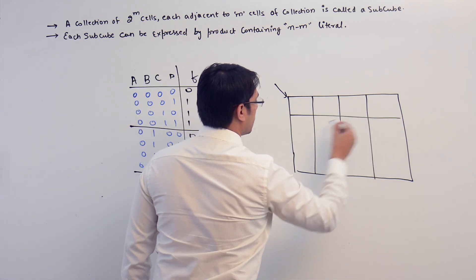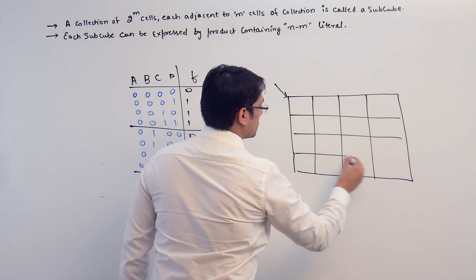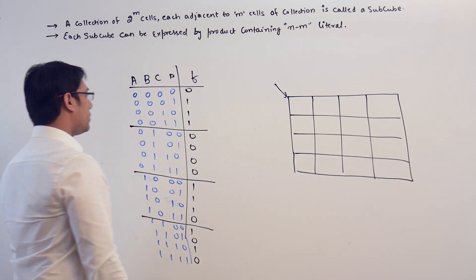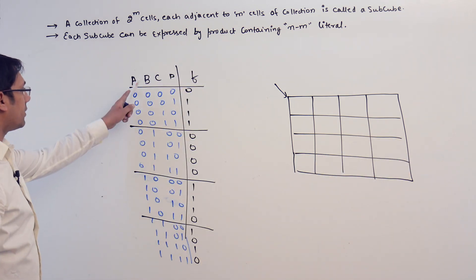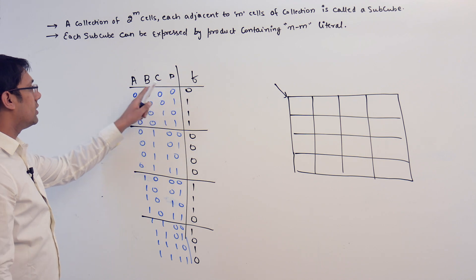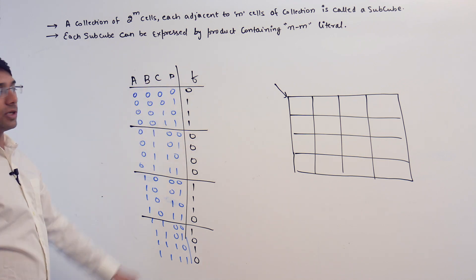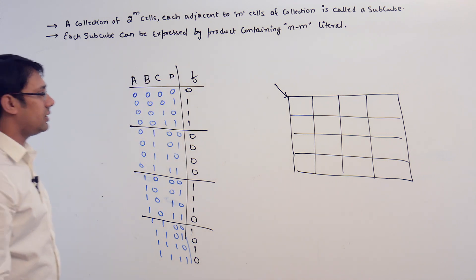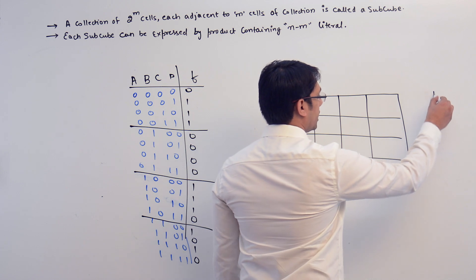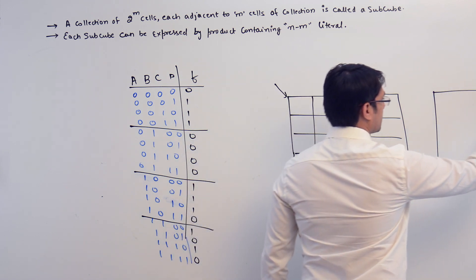These are the total 16 cells. Now we have AB on one axis and CD on the other. It matters where you represent AB and where you represent CD, so let me make both K-maps side by side.